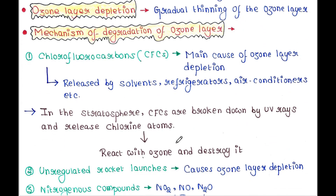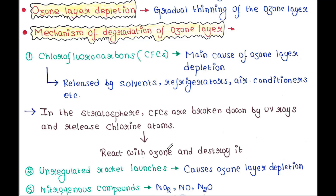Certain chemicals called CFCs — chlorofluorocarbons — are the main cause of ozone layer depletion. These are released by solvents, refrigerators, air conditioners, etc. In the stratosphere, CFCs are broken down by UV rays and release chlorine atoms. These chlorine atoms react with ozone and destroy it.